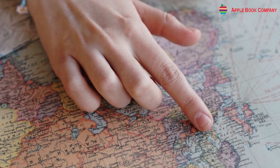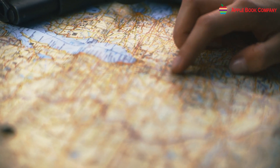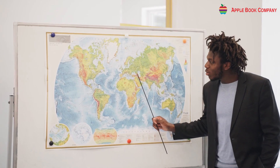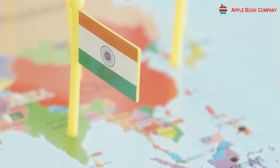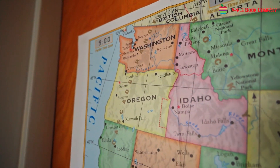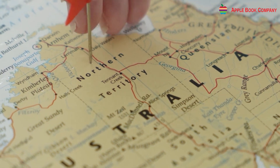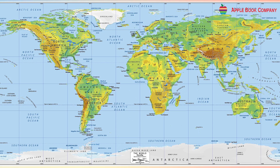Maps are flat drawings of the earth's surface. They show specific areas or regions and provide detailed information about small places too. They may depict a continent, a country, a state, a city, a town, or even smaller areas.